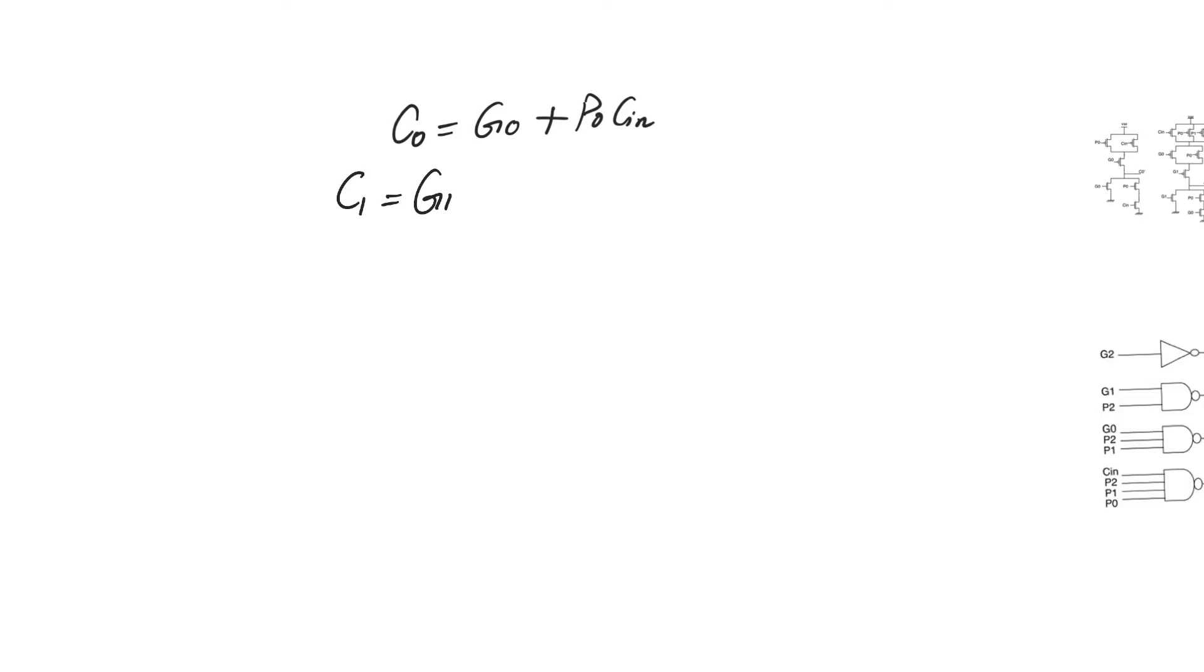C1 is equal to G1 plus P1 C0. G1 and P1 are also ready at time equals zero because they are calculated exclusively from A1 and B1. On the other hand, C0 takes some time to calculate, which is why C1 has to wait a little bit before it starts to calculate.